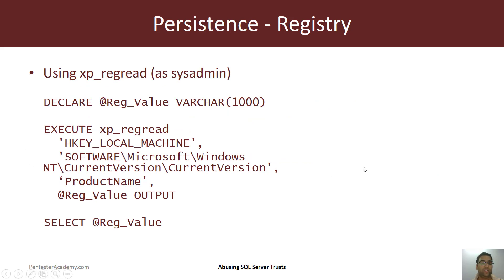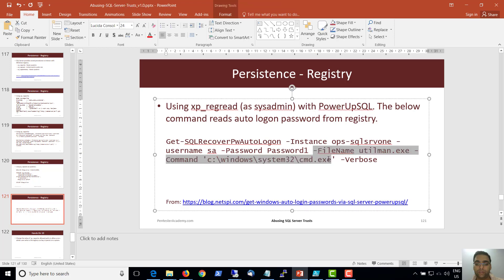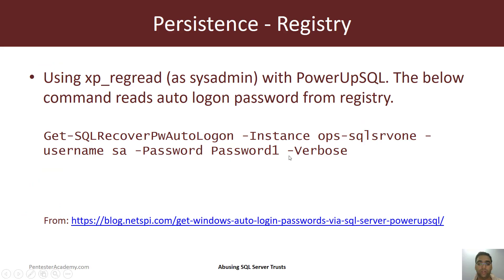Another interesting use case is xp_regread, which can be used to read registry keys if we have enough privileges. We can use Get-SQLRecoverPwAutoLogon to read autologon passwords from the registry if they are present. Autologon passwords, as the name suggests, are used by Windows to automatically log in a user, and the password is stored in a reversible format.